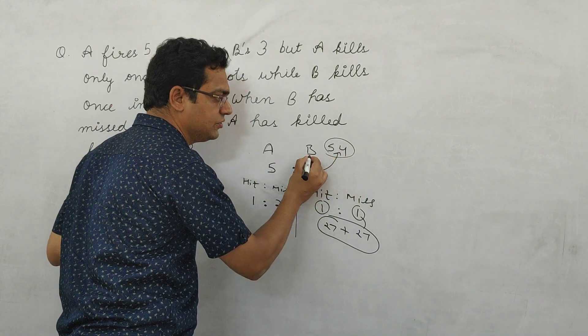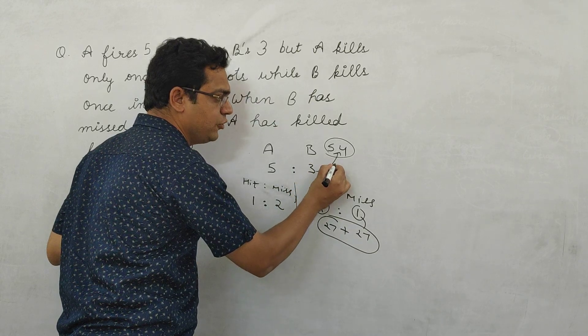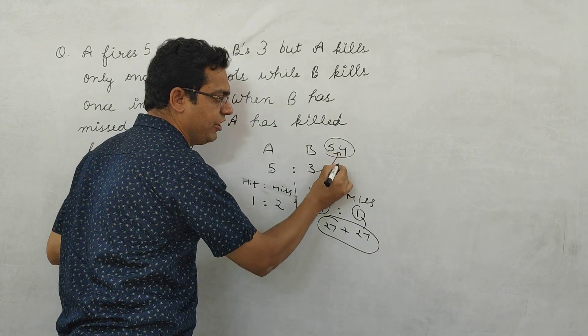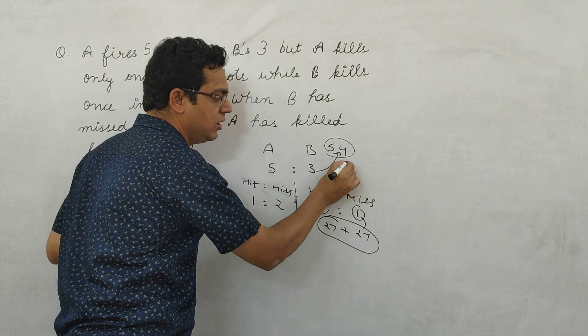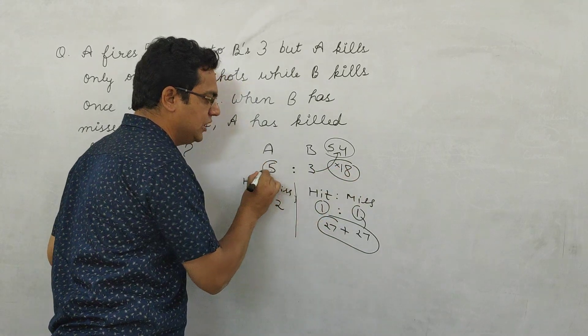The ratio of B to A shots is 3 to 5. If 3 units equals 54 shots for B, then 1 unit equals 18. So 5 units means A fired 90 times.